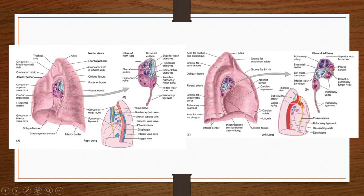In the diagram of the right lung root: two pulmonary arteries are shown, one eparterial (superior lobar) bronchus and one hyparterial (inferior lobar) bronchus, pulmonary veins, bronchial veins, and other structures. On the left side, the eparterial bronchus is absent — there is only one bronchus below the pulmonary artery. In exams, you may be asked to draw and compare the components of the right and left lung roots.